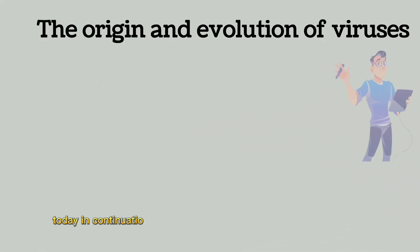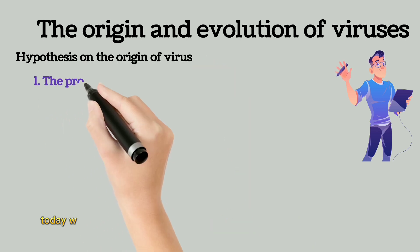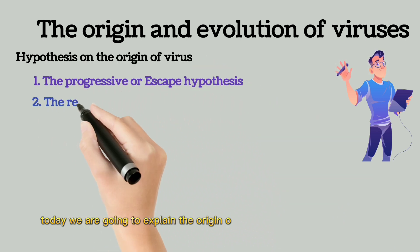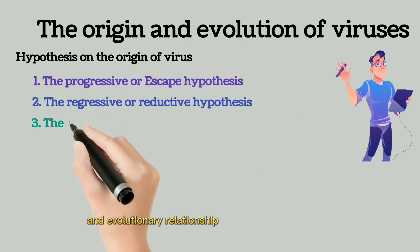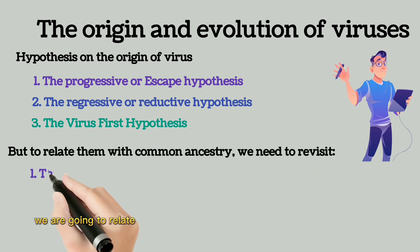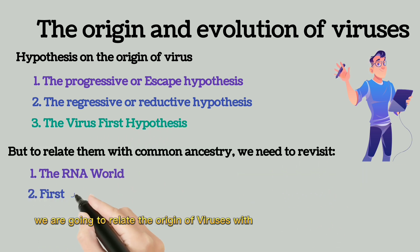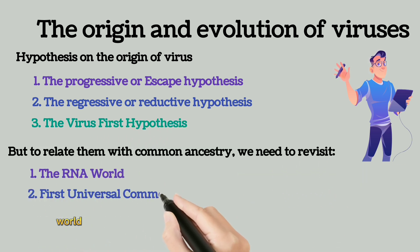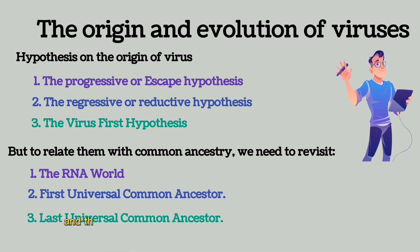Today, in continuation of our virology classes, we are going to explain the origin of viruses and their evolutionary relationships. We are going to relate the origin of viruses with the RNA world, the First Universal Common Ancestor, and the Last Universal Common Ancestor.